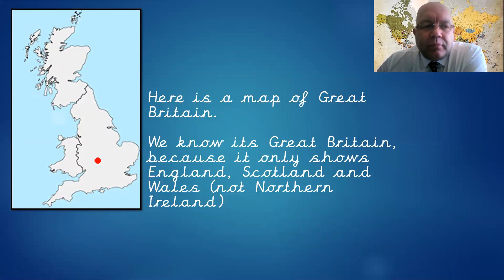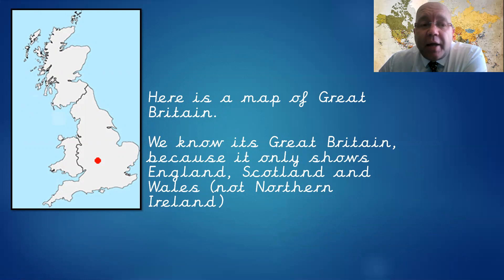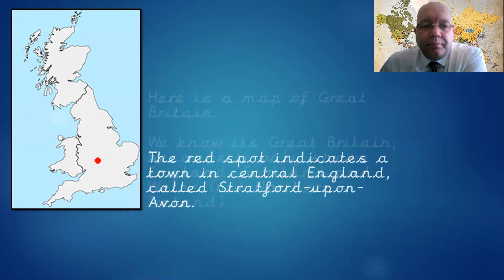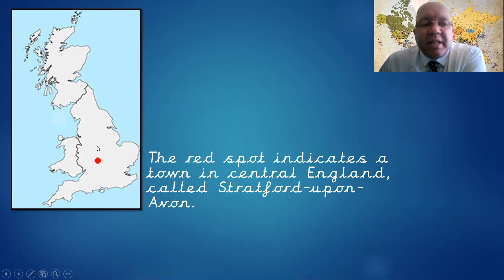Now, here's a map of Great Britain. From a previous lesson, we know this is Great Britain and not the UK, because we're only seeing England, Wales, and Scotland. If we were looking at Northern Ireland, we'd be looking at the UK, and if the whole of Ireland was there, it would be the British Isles. On the map there is a red dot. Just above it is Birmingham, which is in the Midlands, in the middle of England. But we're just a little below Birmingham — we're in a town called Stratford-upon-Avon.